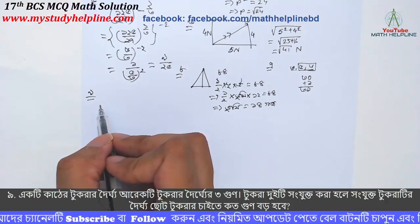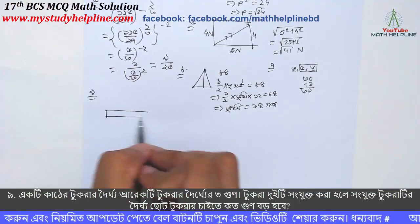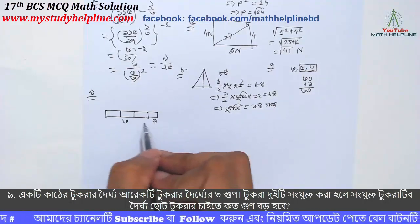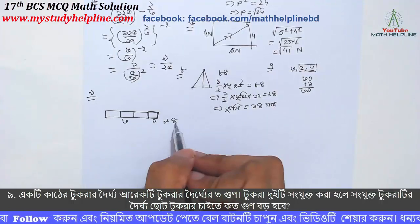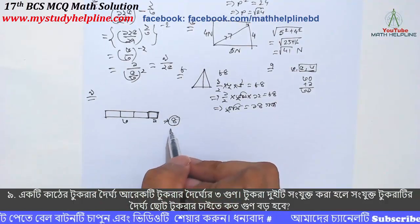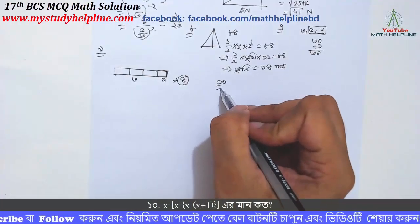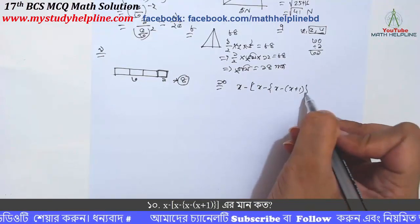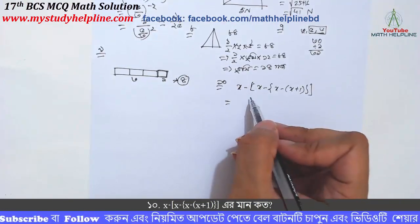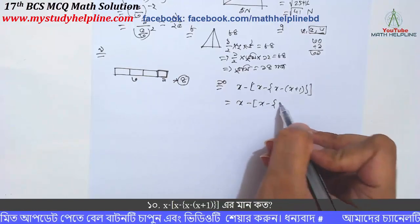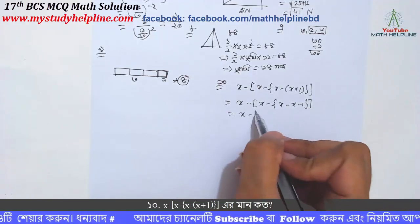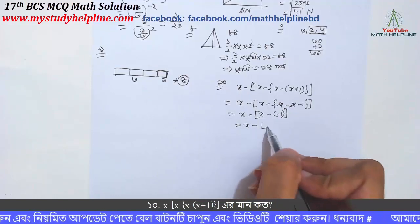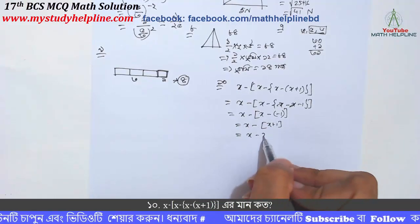સંયુક્ત ટુકડો. problem number 2: x minus x minus 1 equal to x minus x minus 1, equal to. ટુકડો ખૂણો - angle, problem 2 ના ટુકડા.